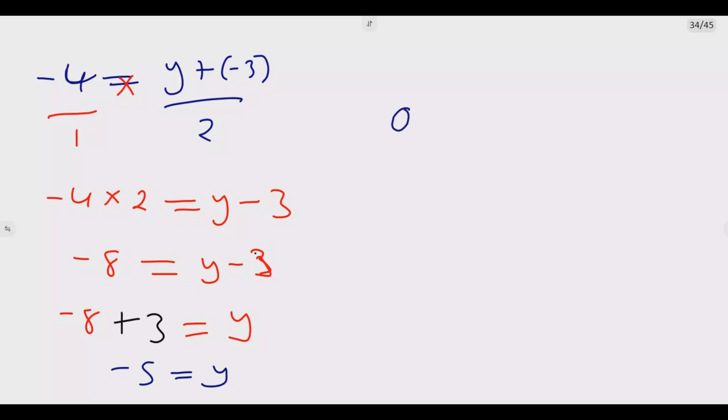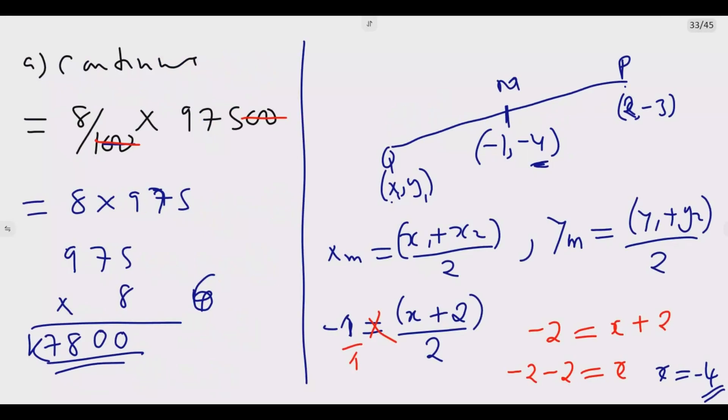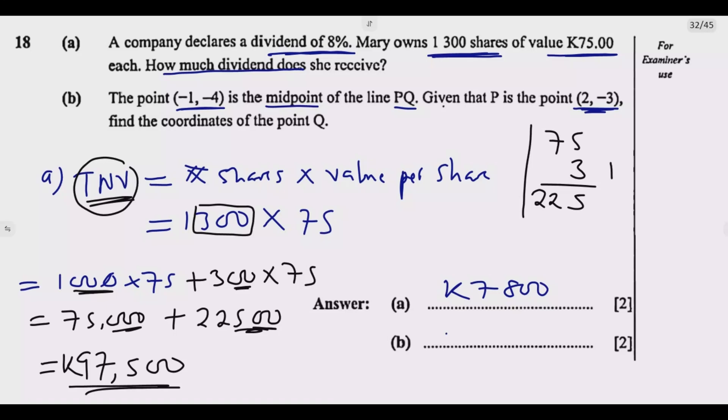So -8 equals Y minus 3. So -8 plus 3 equals Y. So Y is equal to -5. So meaning Q is equal to (-4, -5). Hence when we write the answer, it is (-4, -5). So once you do this, you are good to go. You get the 4 marks.